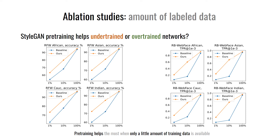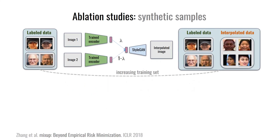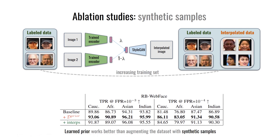The plots on the slide demonstrate the accuracy improvement for 1%, 10%, and 100% labeled data used. Accordingly, we show that the performance increases with the size of the prior dataset. Finally, we motivate the use of a generative prior instead of synthetic samples with an ablation, where the training set is augmented with interpolated images. We show that doubling the dataset's size with them does not help as much as the proposed generative prior.